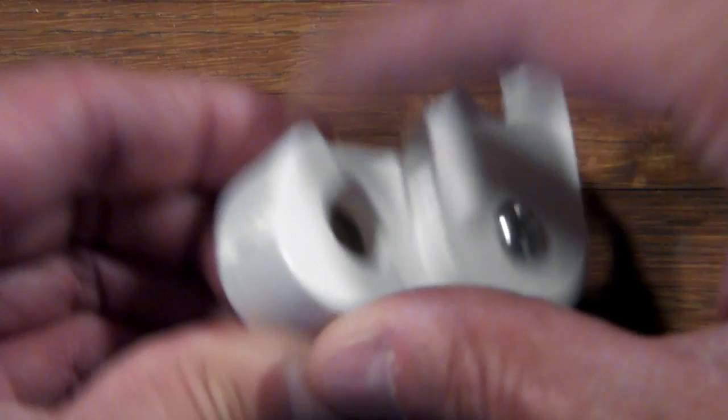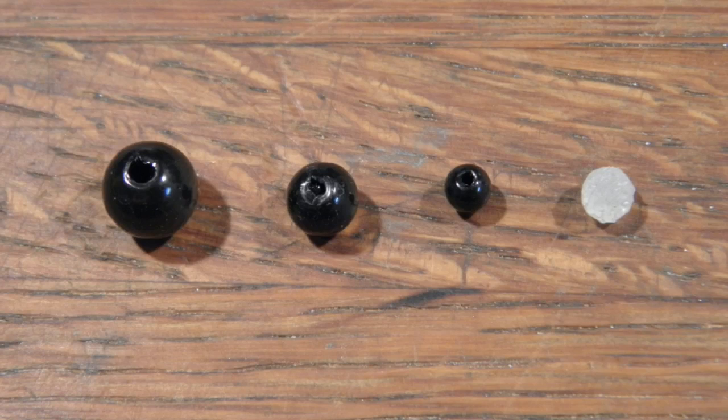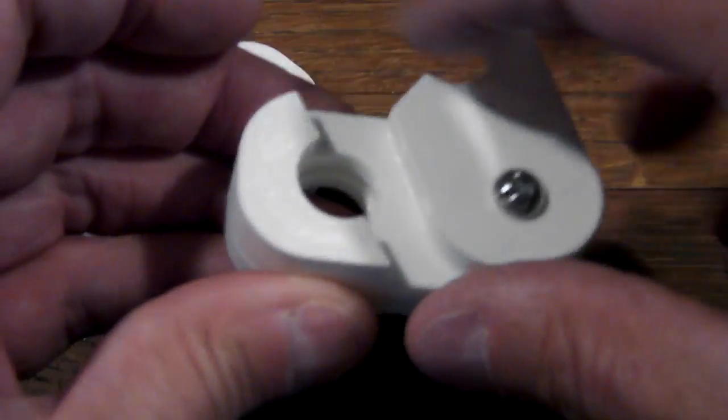The standard beads are 8, 6, and 4 millimeters. On the far right here, you see a white bead, and that one is actually a molded hot glue bead.